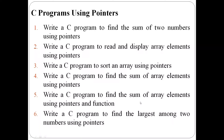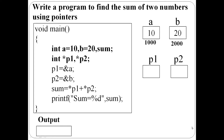In this video, I am going to explain these six C programs. Write a program to find the sum of two numbers using pointers. int a equal to 10, b equal to 20. a and b are two numbers. Memory space is reserved and 10 and 20 are assigned.